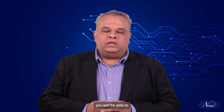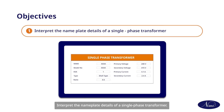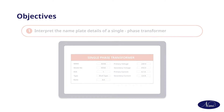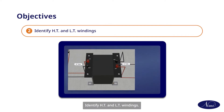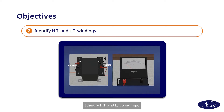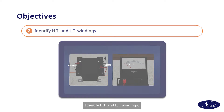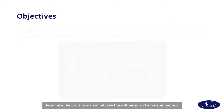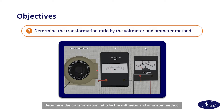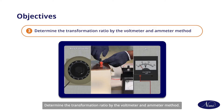At the end of this video, you will be able to interpret the nameplate details of a single phase transformer, identify HT and LT windings, and determine the transformation ratio by the voltmeter and ammeter method.